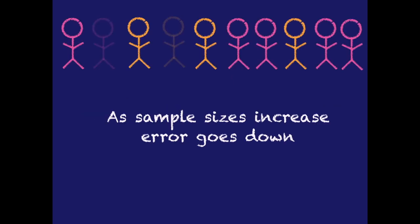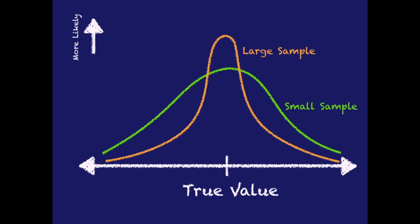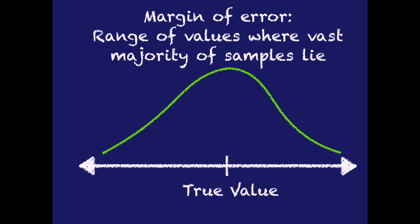The general principle is that as the sample size increases, the error in your estimate goes down. Intuitively, there is less wiggle room to be too different from the breakdown of the full voting population. We can visualize this effect on a graph: as you increase the sample size, more of your estimates are closer and closer to the true value. Small samples tend to be spread out further from the true value, while larger samples tend to be close to it. This type of graph constructs a term you may have seen on the news called the margin of error.